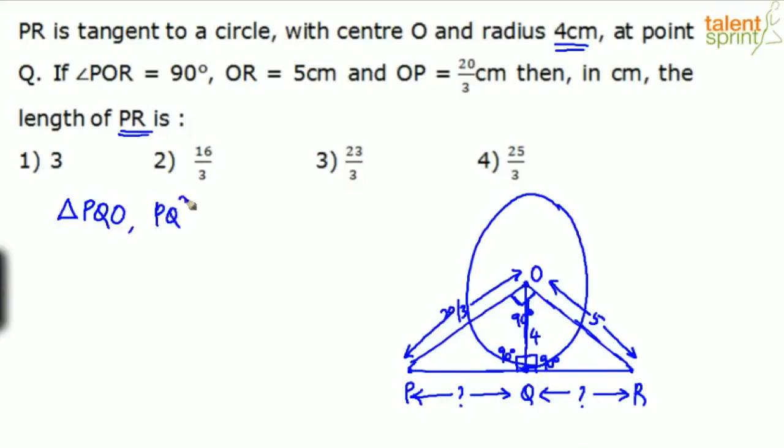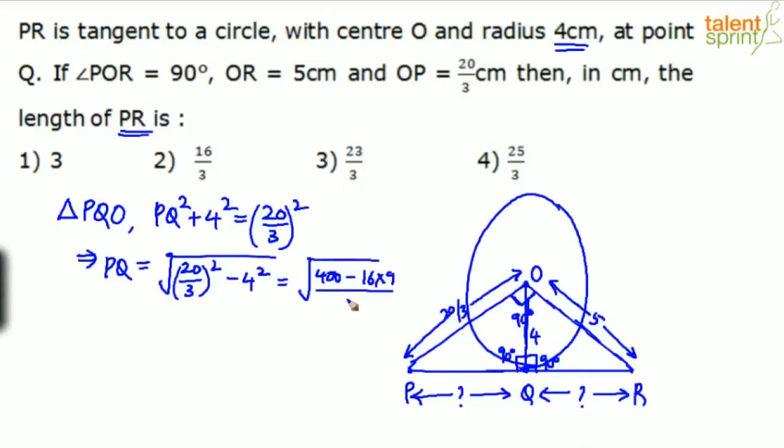So we can say PQ squared plus 4 squared equals to 20 by 3 whole squared. So from this PQ will be equal to root over 20 by 3 whole squared minus 4 squared. This is like 400 by 9 minus 16. 16 into 9 is 144. 400 minus 144 is 256. So PQ will be equal to square root of 256 by 9, which comes out to be 16 by 3.